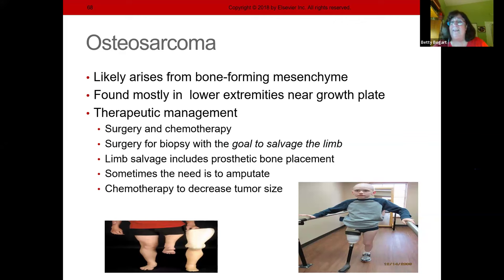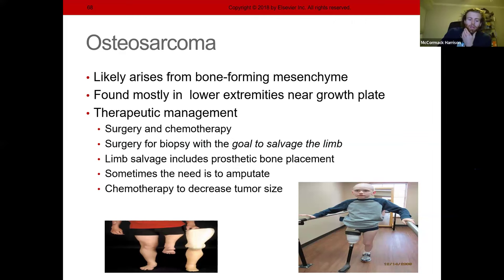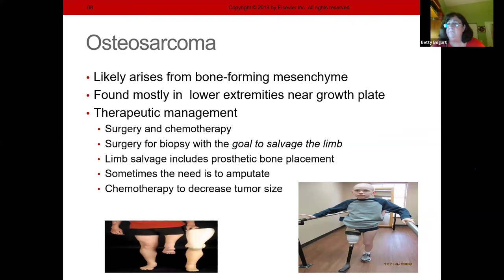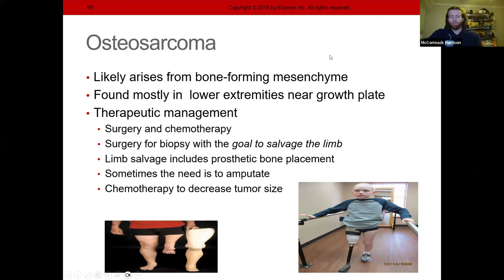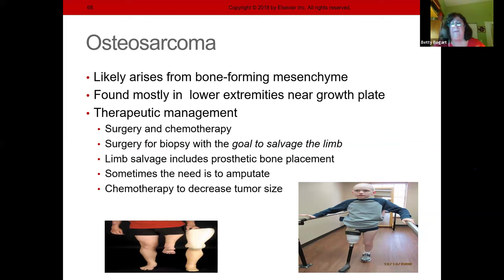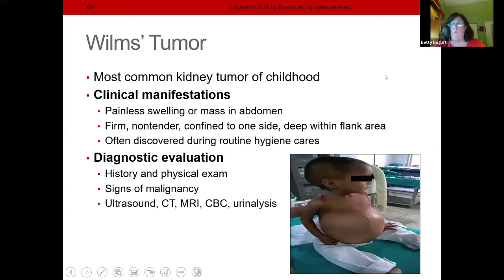Why must the entire femur be removed? Because the cancer cells are inside the bone marrow of the femur — removing only part would allow recurrence. Chemo is given afterward and then physical therapy to get them moving again.